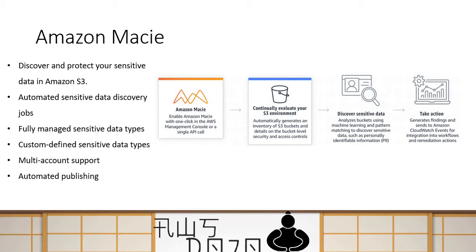We are going to cover custom data types in the exercise today. Macie supports multi-account, meaning you can do multi-account scanning at one place. The findings from Macie are published to services like EventBridge or Security Hub. Due to this publishing, you can also take actions on the findings. Your data is stored in S3, Macie uses either out-of-box or custom sensitive data types to identify sensitive data and the risk it carries, then publishes findings to EventBridge or Security Hub so you can take manual or automated action.